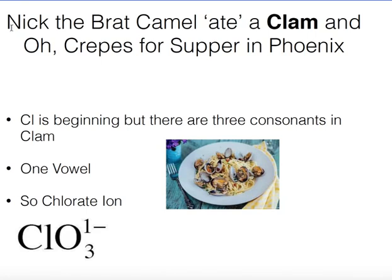Looking at 'Clam': CL is the beginning — it looks like the halogen chlorine. Counting all consonants in 'clam' — C, L, M — there are three, which means three oxygens. There's one vowel, the A, meaning a minus one charge. So from 'clam' you get chlorate: ClO3^-.